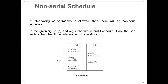For example, with transactions T1 and T2, the operations are interleaved — T2 writes the value of B, then T1 reads the value of B, then T1 writes the value of B, and so on. In this example, T1 and T2 have interleaved operations, making it an example of a Non-Serial Schedule.